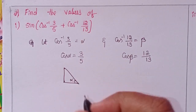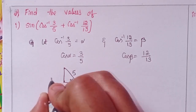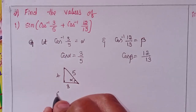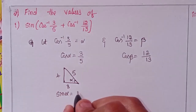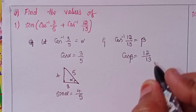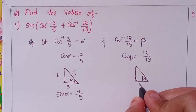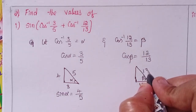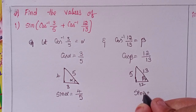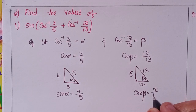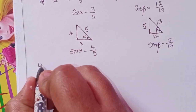For alpha, cosine is adjacent side by hypotenuse, so the opposite side is automatically 4. Therefore sine alpha equals 4 by 5. For beta, adjacent side by hypotenuse gives the opposite side as 5, so sine beta equals 5 by 13.